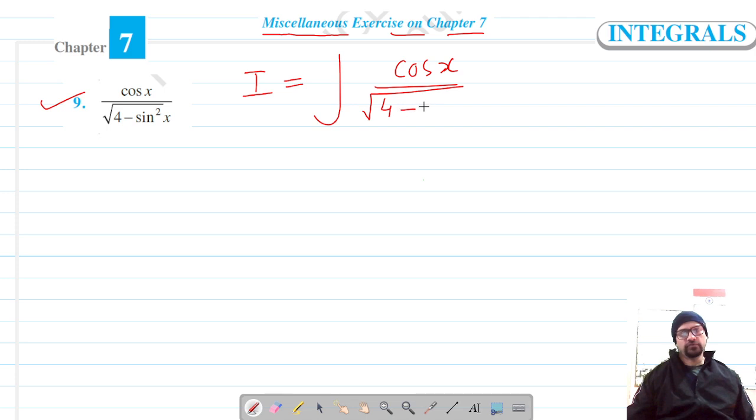It's a clear case where we can substitute sine and get cos x as its differentiation, so I'm going to substitute sine x as t and the differentiation of sine x is cos x dx equals dt.